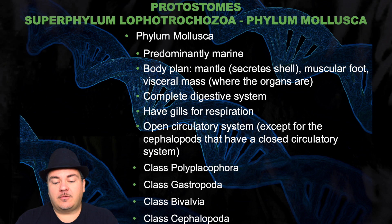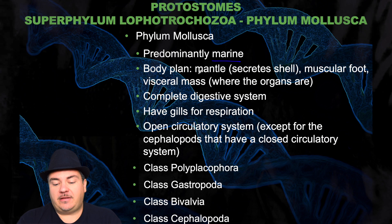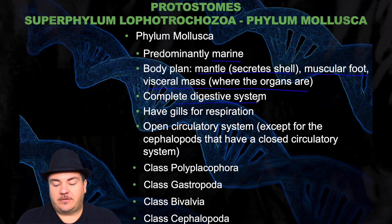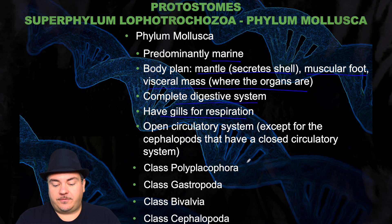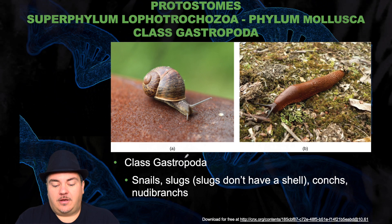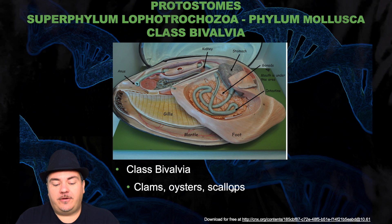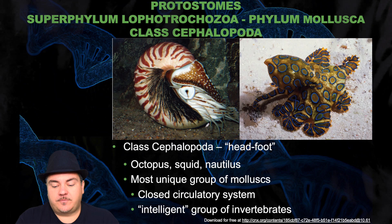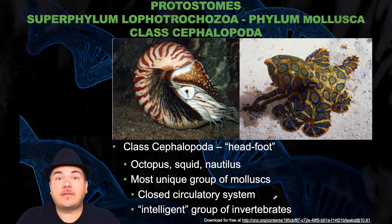Next we have the phylum Mollusca — predominantly marine organisms. Their body plan includes a mantle that secretes a shell, a muscular foot, and a visceral mass where the organs are located. They have a complete digestive system, gills for respiration, and an open circulatory system — except for the cephalopods, which have a closed circulatory system. Within this phylum we have four classes: Polyplacophora, which have many plates and use a radula to scrape algae off rocks; Gastropoda — snails, slugs, conchs, and nudibranchs; Bivalvia — clams, oysters, and scallops; and Cephalopoda, meaning 'head-foot' — octopus, squid, and nautilus. Cephalopods are the most unique mollusks; they have a closed circulatory system and are an intelligent group of invertebrates.